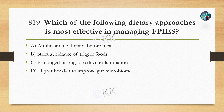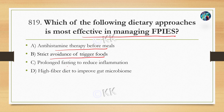Which of the following dietary approaches is most effective in managing FPIES? Option A: antihistamine therapy before meals, Option B: strict avoidance of triggering foods, Option C: prolonged fasting to reduce inflammation, Option D: high-fiber diet to improve gut microbiome.